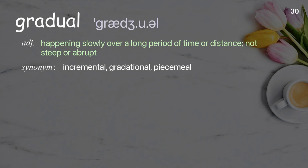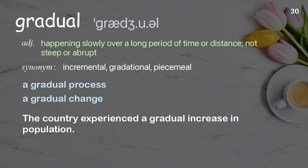Gradual: Happening slowly over a long period of time or distance, not steep or abrupt. Examples: A gradual process, a gradual change. The country experienced a gradual increase in population.